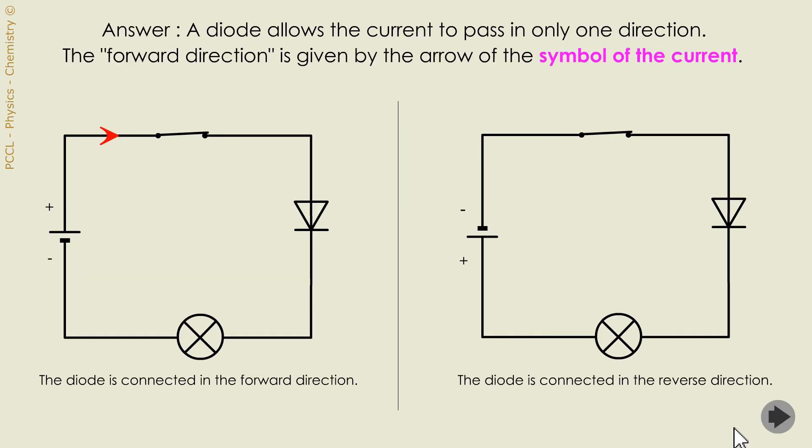In fact, there is no current at all. So I don't need to ask myself the question of the current arrow, to know how I represent it. No current, no arrow. As is the case here on the right. There is no current here on the right. We just saw it.